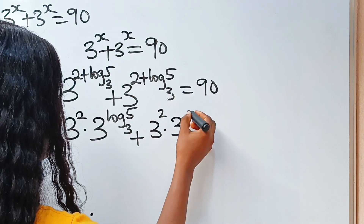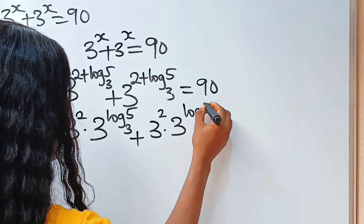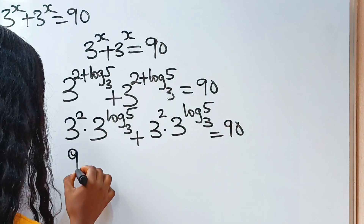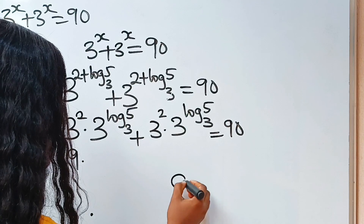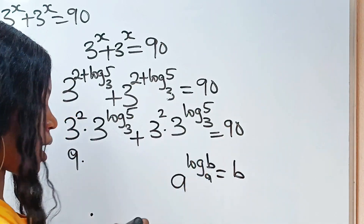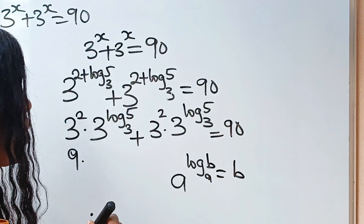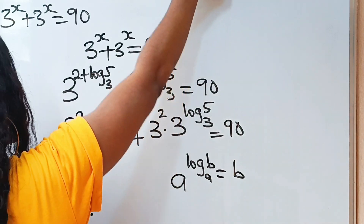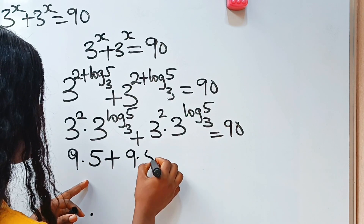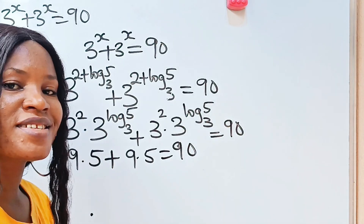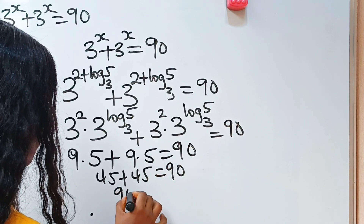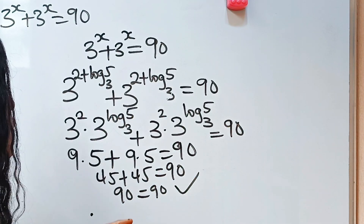So 3 squared multiplied by 3 raised to the power of log 5 base 3, plus 3 squared multiplied by 3 raised to the power of log 5 base 3, is equal to 90. Now, when you have a raised to the power of log base a of b, this is equal to b. That means 3 to the power of log 5 base 3 equals 5. So we write 9 multiplied by 5 plus 9 multiplied by 5 is equal to 90. That is 45 plus 45 is equal to 90, and here we have 90 is equal to 90. This proves that our solution is right.